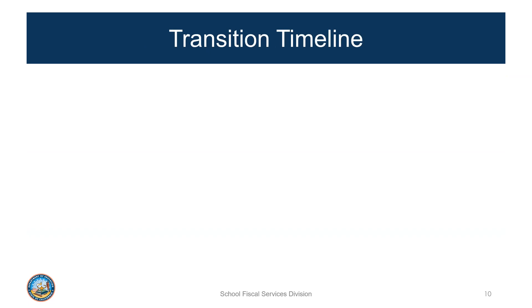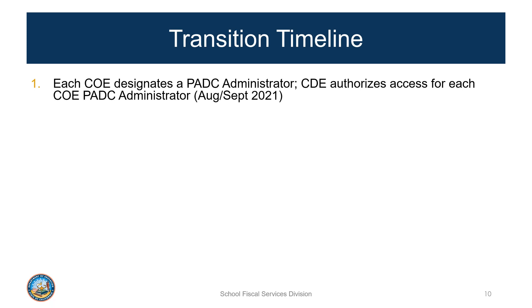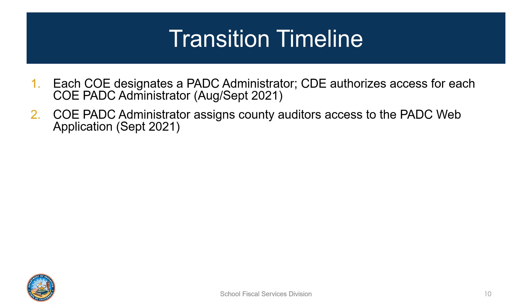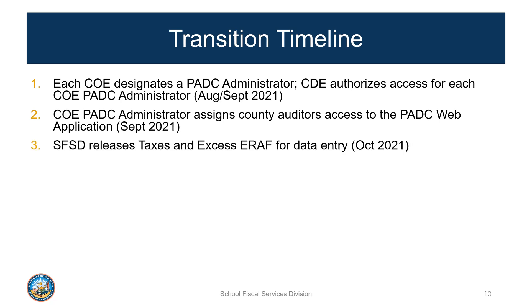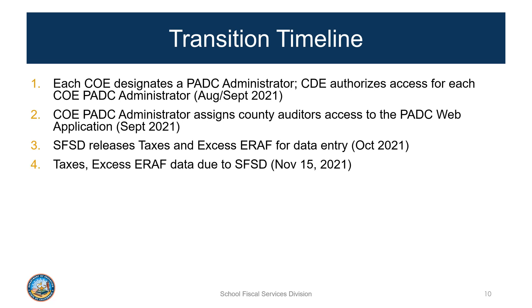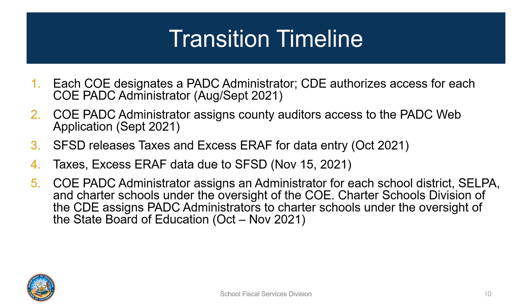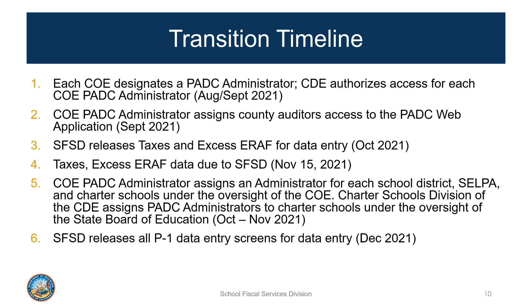The transition to the web application begins in fall 2021. The first step is the assignment of a PADC administrator for each county office of education. This enables the second step, in which the COE administrator assigns a county auditor administrator. Taxes and excess ERAF will be available for reporting on or around October 1st. The county auditors and COEs should complete taxes reporting by November 15th. Also during October and November, COEs will be setting up local users, because each school district and charter school should have an administrator to certify data for principal apportionment. The first period reporting will begin on or around December 1st and will conclude on January 18th when all P1 data are due to CDE.